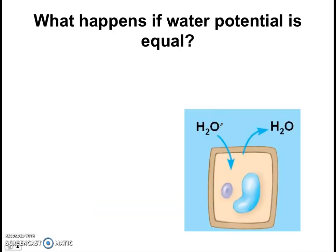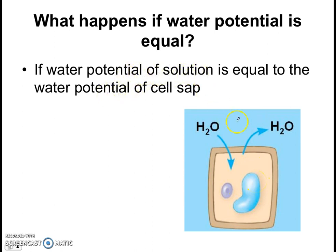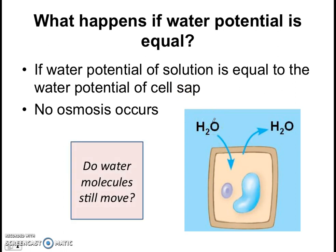What happens if we place a plant cell in a solution where the water potential is equal to the cell sap? In this case, the water potential of the surrounding solution equals the water potential of the cell sap. Therefore, no osmosis occurs. However — question — do water molecules still move? The answer is yes. Water still moves in and out of the cell, but there's an equal number of water molecules moving in as moving out. So there is no visible change to the cell, no osmosis, and no net movement of water molecules.